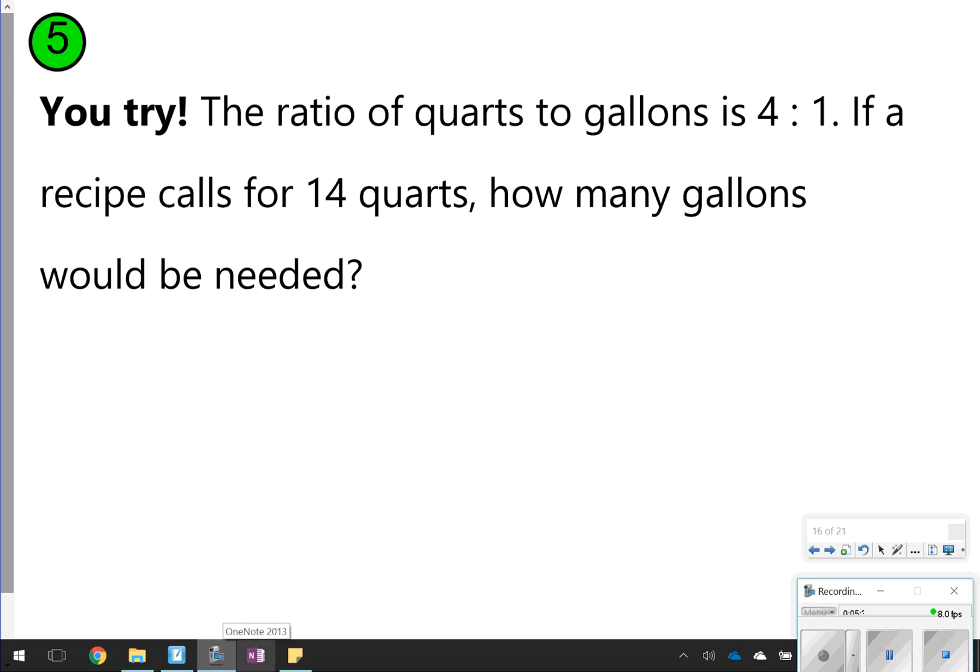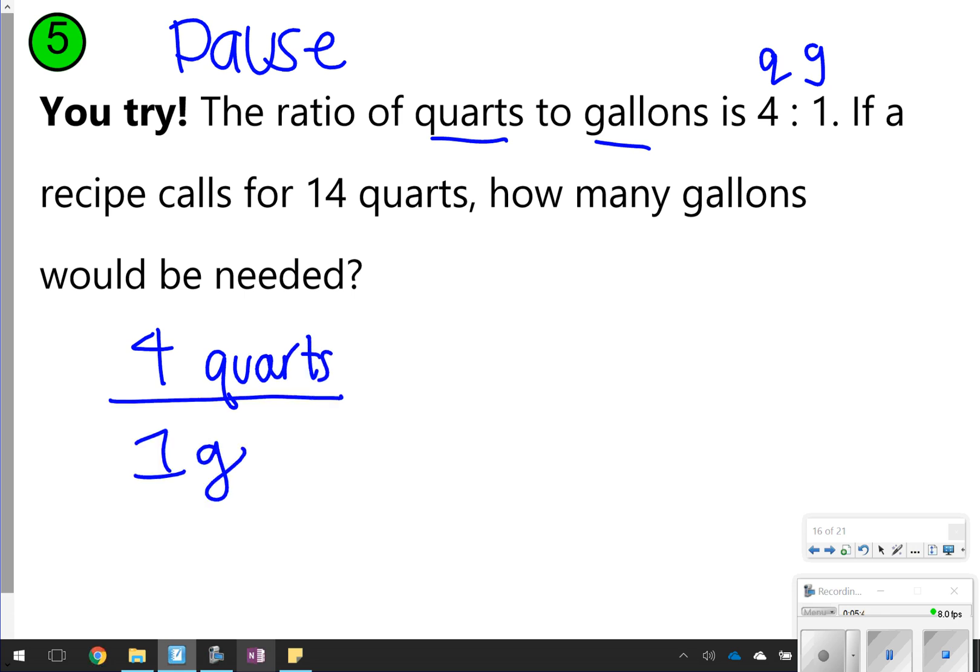This one you're going to try on your own, so go ahead and pause it, try it, and then click play to check. So it says the ratio of quarts to gallons is 4 to 1. So that means 4 quarts, 1 gallon. So I'm going to go ahead and write that, 4 quarts over 1 gallon. If a recipe calls for 14 quarts, 14 would go on top with the other quarts, how many gallons, x gallons, would we need? This one just didn't say to solve, so all you needed to do was write that.